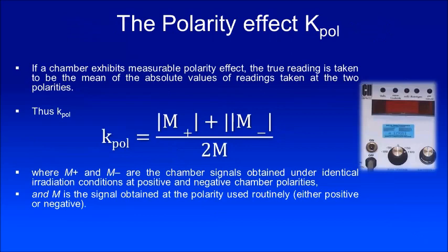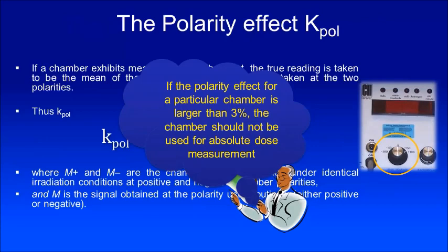The next one is the polarity effect correction factor. If a chamber exhibits a measurable polarity effect, the true reading is taken as the mean of the absolute values of readings taken at two polarities — positive and negative. You apply the normal polarity voltage, measure M+, then switch to negative polarity, measure M−, and take the mean to get K_pol. If the polarity effect for a particular chamber is larger than 3%, please don't use it — get it corrected. Polarity effect cannot be too high.